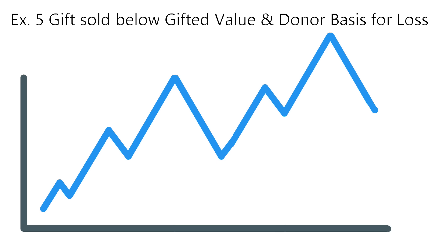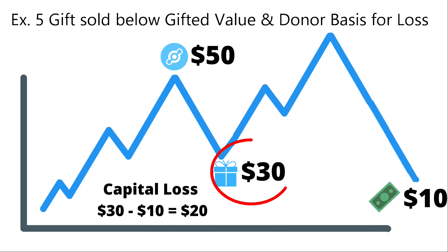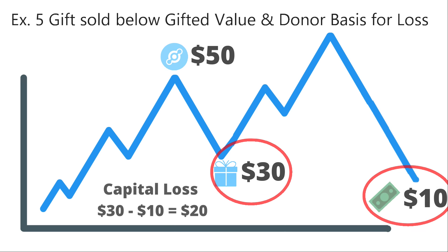Example 5: a gift sold below the gifted value and the donor basis for a loss. In this case, Jason purchased one HNT at $50, gives it to Austin as a gift at $30, and then after a large market downturn, Austin sells at $10. If your gift has depreciated in value since receipt and is below the donor's cost basis, you use the value of the gift at the date given. Austin uses the gift value of $30, not the original donor basis of $50, to calculate his capital loss of $20.